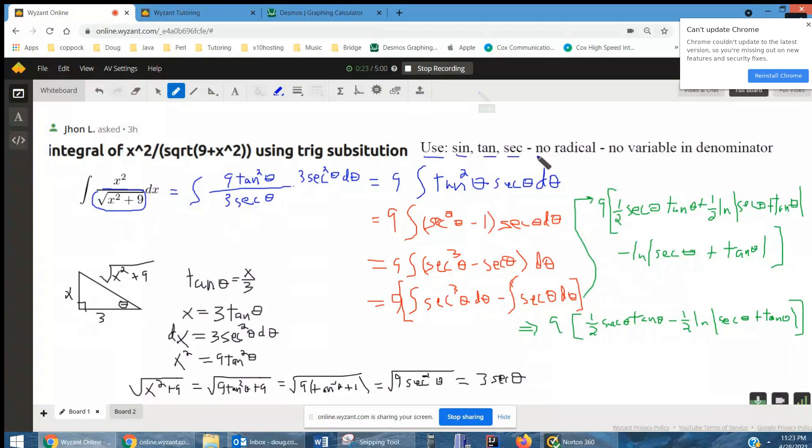You want substitution not to contain a radical, and you don't want any variable in the denominator. That helps you decide whether to use sine, tangent, or secant.